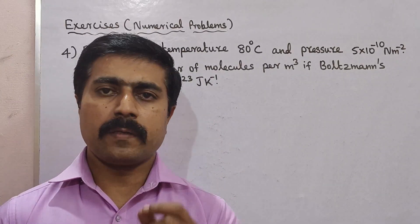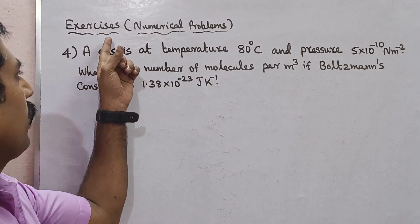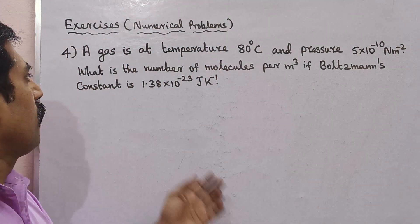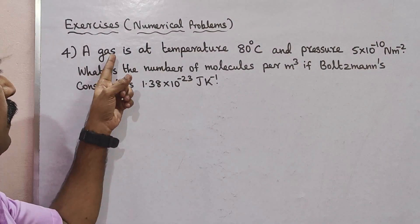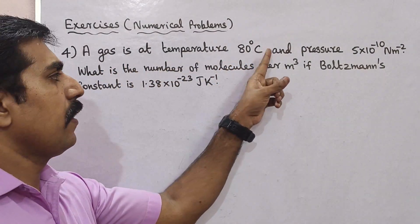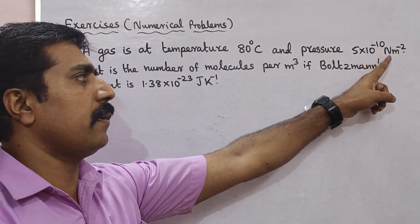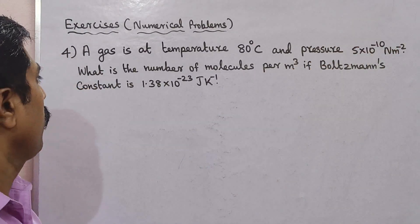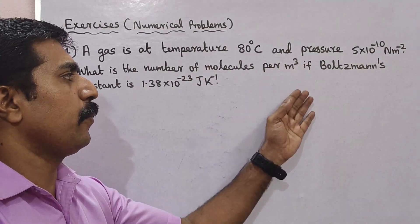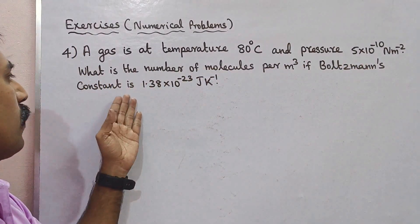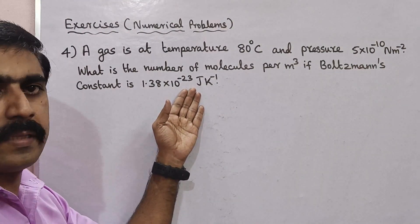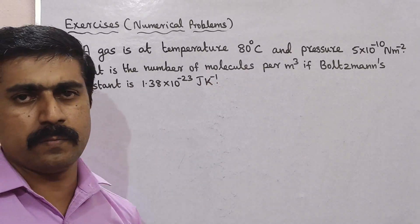Hi students. We have a simple exercise and numerical problem. See the problem: a gas is at temperature 80 degrees Celsius and pressure 5 into 10 power minus 10 Newton meter power minus 2. What is the number of molecules per meter cube if Boltzmann's constant is 1.38 into 10 power minus 23 joule Kelvin power minus 1?